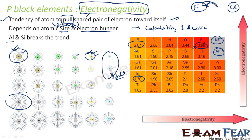If you see, the trend is that if you go down the group it should decrease. But here it is increasing. Similarly, it has to decrease but as you can see it has increased. So these are trend breakers here.